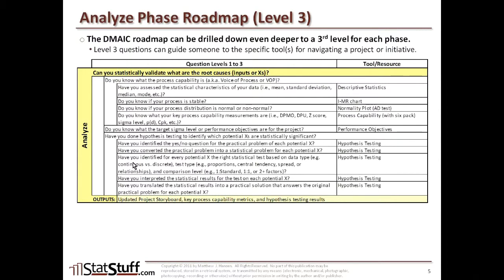Once you've worked through all the Xs, you should have the output for the analyze phase: an updated project storyboard with key findings, your key process capability metrics identified earlier, and all results from hypothesis testing on each X relative to the Y. With all this information, you should be able to answer the top-level question for the analyze phase — statistically validating the root causes. Based on the data collected and the hypothesis testing, you'll know which ones are the root causes, preparing you to move on to the improve phase.